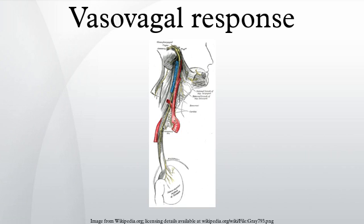Cause: vasovagal syncope occurs in response to a trigger, with a corresponding malfunction in the parts of the nervous system that regulate heart rate and blood pressure. When heart rate slows and blood pressure drops, the resulting lack of blood to the brain causes fainting and confusion. Typical triggers include prolonged standing or upright sitting, standing up very quickly, stress, trauma, and POTS — where multiple chronic episodes are experienced daily, most commonly upon standing up.